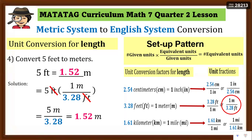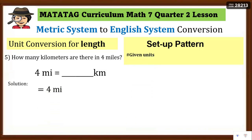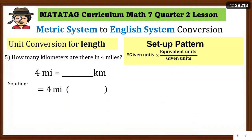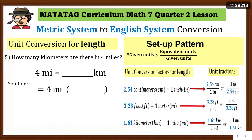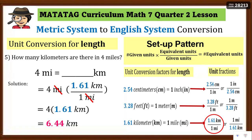So 1.52 meters ay may katumbas na five feet — limang ruler yan. Number five: how many kilometers are there in four miles? Write the equation and set a pattern. Miles ang given, i-change mo ng kilometers. We have to use 1.61 kilometer over one mile — yung miles nasa denominator, kilometer nasa numerator. Cancel 'miles,' multiply four times 1.61 kilometers — equals 6.44 kilometers.